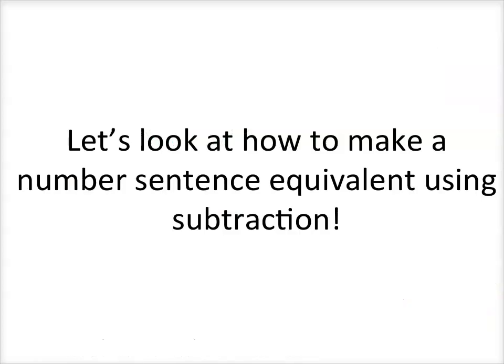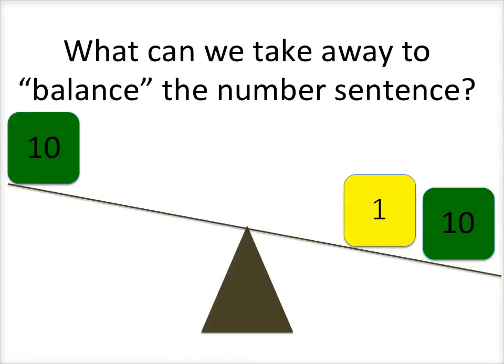Now let's look at how we can use subtraction in the same way to keep our number sentences equivalent. Now I have blocks on my scales and I can see that they're not equivalent. What number can I take away to make these equivalent? We have tens on both sides of the equation, so all we need to do is get rid of that extra one.